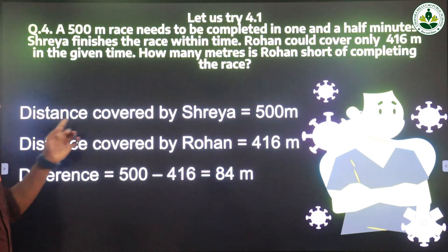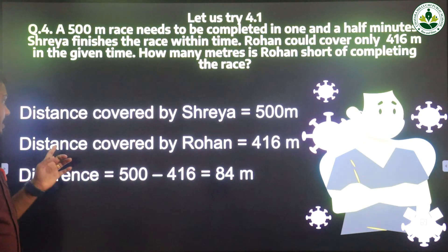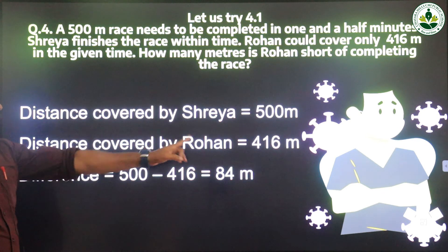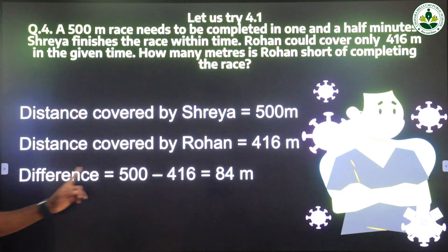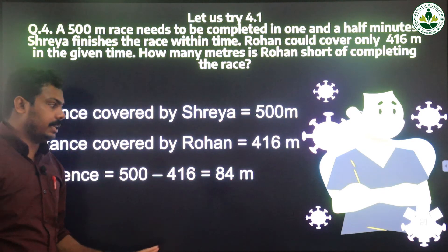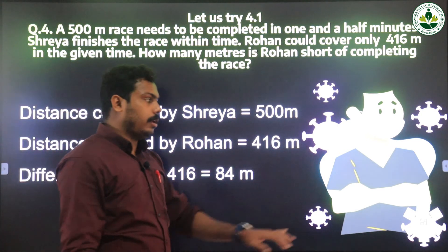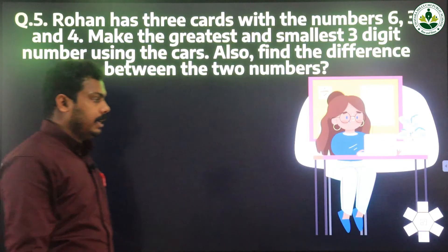Distance covered by Shriya is 500 meters. Distance covered by Rohan is 416. The difference is 500 minus 416, that is 84 meters.